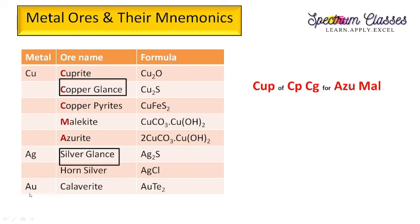Gold is found most often in its native form, but it does have ores. Calaverite is an ore of gold with tellurium (AuTe2). These are the ores summarized in this video. Please subscribe to the channel and give a thumbs up. Write in the comment section which mnemonic you find the most funny and useful. Thank you all.